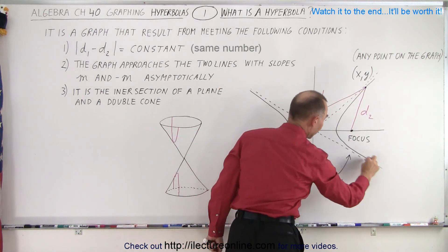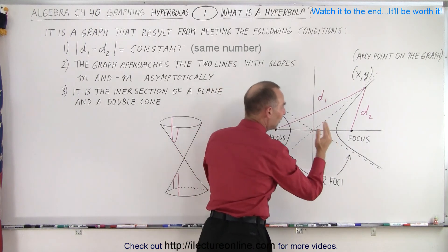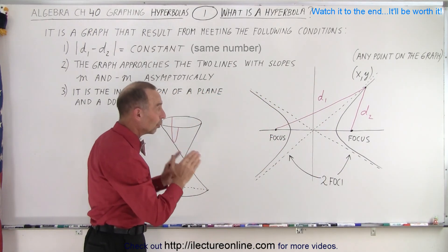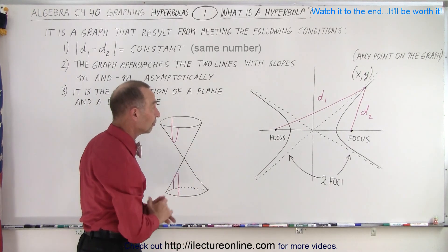So you can put the point anywhere on this parabola on this side right here or anywhere on that side. The difference, the absolute value of the difference between those two distances is always equal to a constant, the very same constant. So that makes it very interesting.